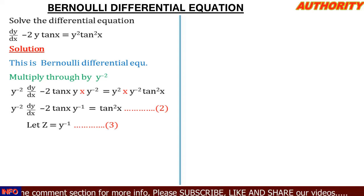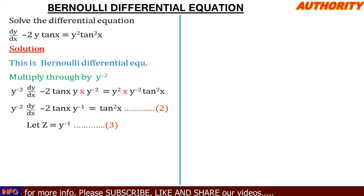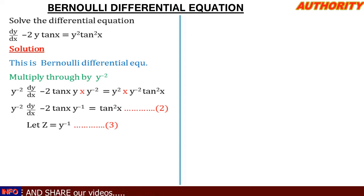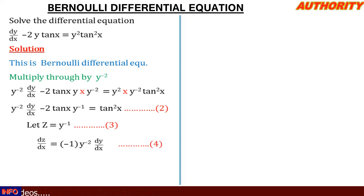Now let's differentiate z with respect to x. We differentiate y⁻¹ using the chain rule: bring the minus 1 down, giving y⁻², then multiply by dy/dx. So dz/dx = minus y⁻²·(dy/dx). We call this equation 4.